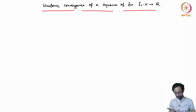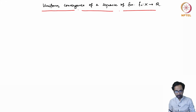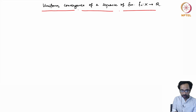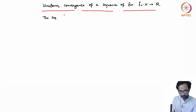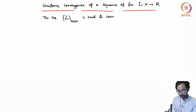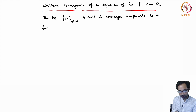The first part that we need is a convergence property of a sequence of real-valued functions from X to ℝ, and this is called uniform convergence. You might have already seen it in your analysis class, but let me recall it here. A sequence of functions Fₙ is said to converge uniformly to a function F from X to ℝ.